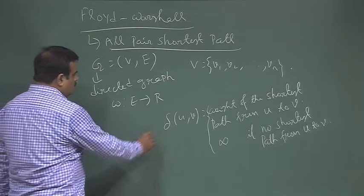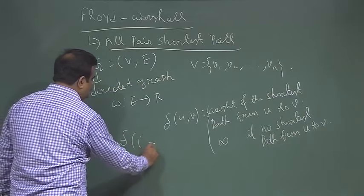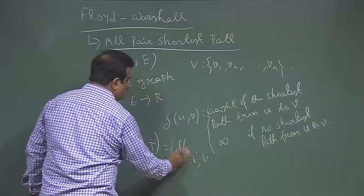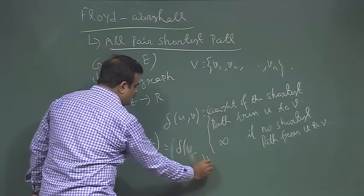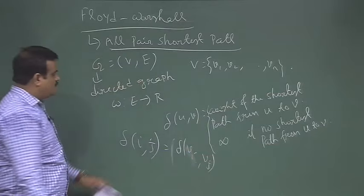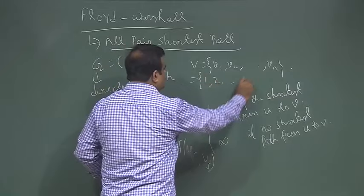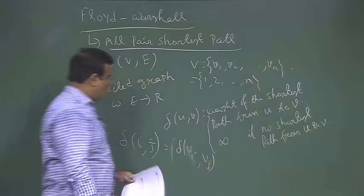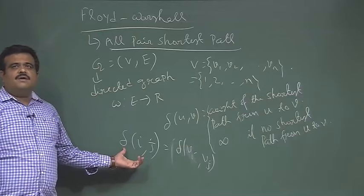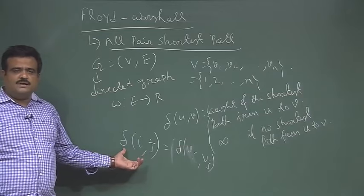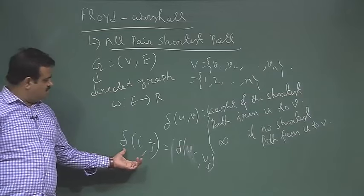Basically our aim is to find the deltas: delta(i, j), which is delta(vi, vj). Our vertices are numbered from 1 to n, so delta(i, j) is the weight of the shortest path from vi to vj. It could be infinity if there is no shortest path.